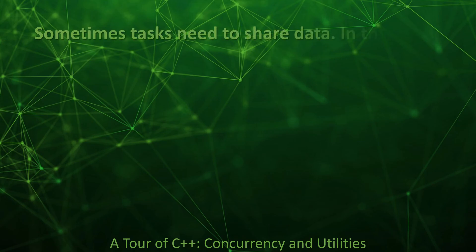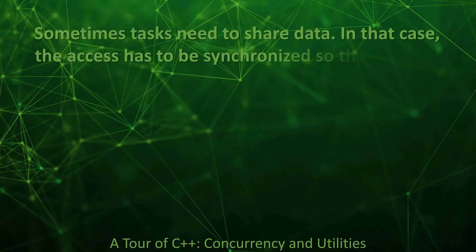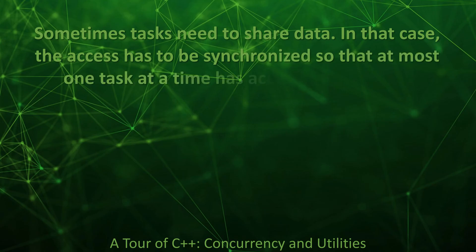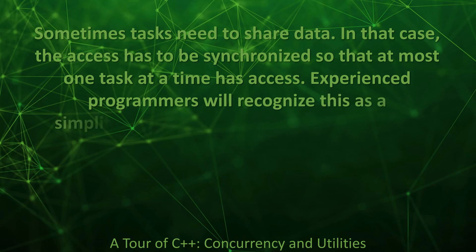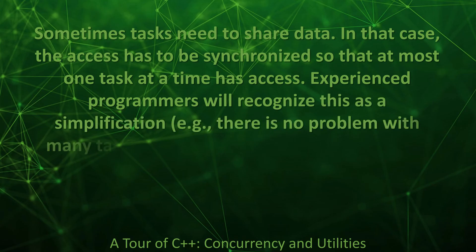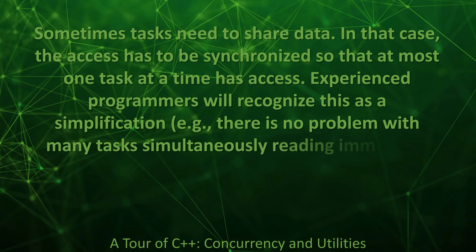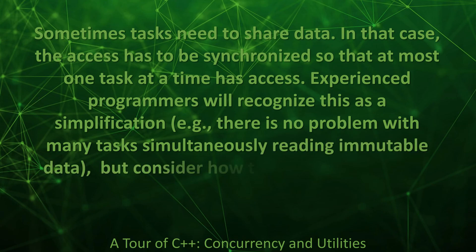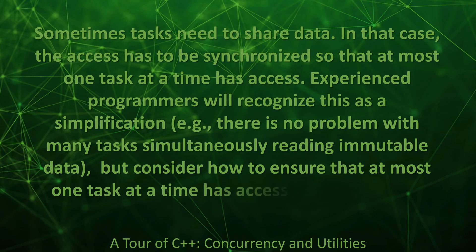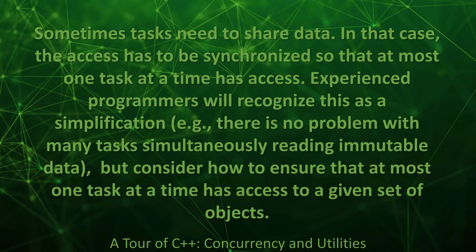Sometimes tasks need to share data. In that case, the access has to be synchronized so that at most one task at a time has access. Experienced programmers will recognize this as a simplification — for example, there is no problem with many tasks simultaneously reading immutable data. But consider how to ensure that at most one task at a time has access to a given set of objects.